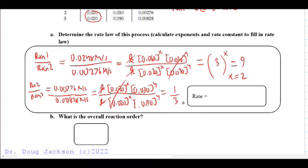And so that's the same as 1/3. That 0.333 repeating, that's the same as 1/3, and so we end up with 0.03 should be 0.090 there, and so that's 1 over 3. 1 over 3 to the Y equals 1 over 3. Anything raised to the 1 gives us itself, and so that's what we have, Y equals 1. So we've got X, we've got Y, now we can solve for the rate constant.